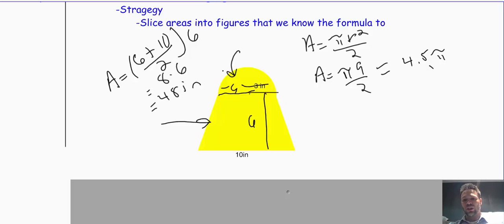All of these are inches, so I should have inches squared. Now all I have to do is add 48 inches squared plus 4.5π.